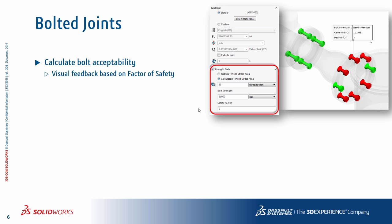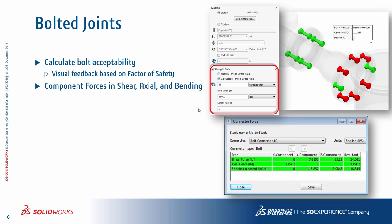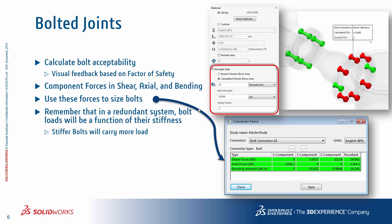Bolt connectors inside SOLIDWORKS Simulation provide the primary outputs required to size the bolts in the system. There is a visual feedback based on a factor of safety calculation, which is the quickest and easiest way to see what bolts are going to work and what bolts are actually going to fail. The shear, axial forces, and bending moment are also provided as an output for each fastener, thus allowing you to determine whether you get sufficient preload or axial tension to survive the external loads. It's important to remember that most systems are redundant in that the load path isn't so straightforward. The stiffness of the geometry as well as the stiffness of the bolts will actually determine how much load the bolt is going to carry.